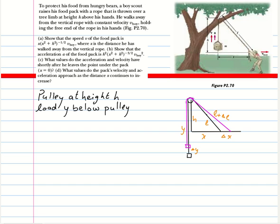This distance is l, and suppose someone is pulling this along the x direction. What we have to find out is: if dx/dt is given — that is, the velocity in the x direction — what is the velocity in the y direction? This is essentially the same problem as given in the Resnick-Halliday book.